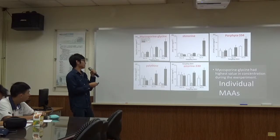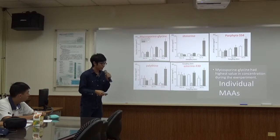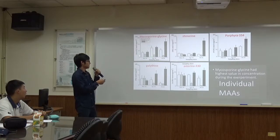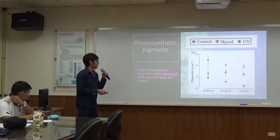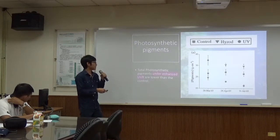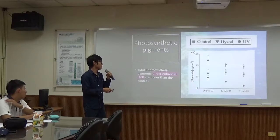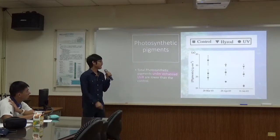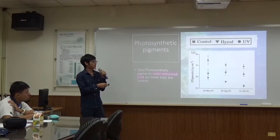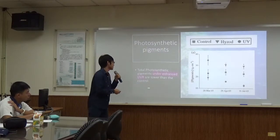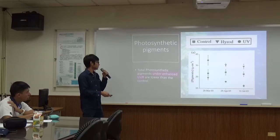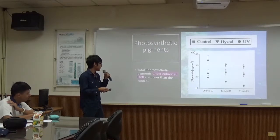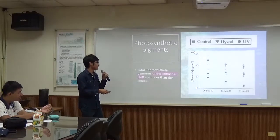In the same way, the X axis is similar. The Y axis is the individual MAA concentration. You can see this particular MAA has the highest concentration during the experiment. And look at this figure — the Y axis is the total photosynthetic pigment. Under enhanced UVR, the photosynthetic pigments are lower than control.